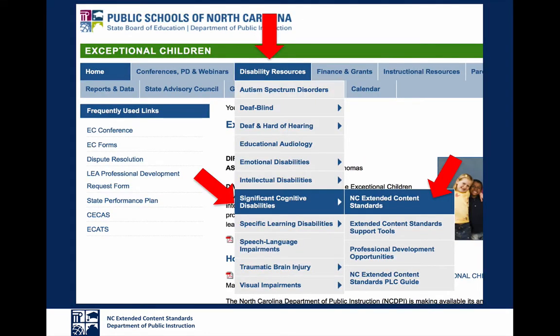The new Extended Content Standards can be found on the Exceptional Children's webpage under Disability Resources. Scroll down to Significant Cognitive Disabilities, and then select North Carolina Extended Content Standards.